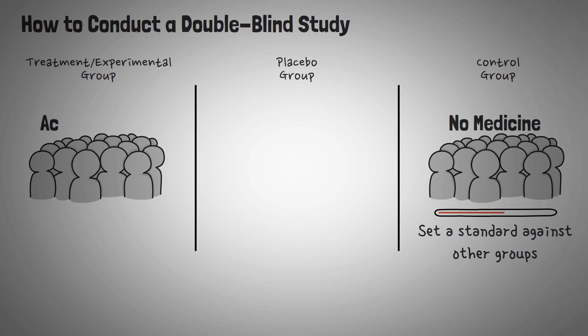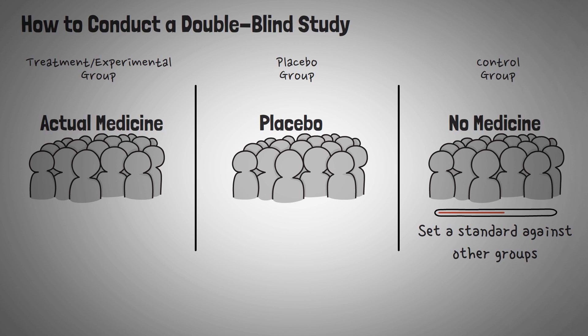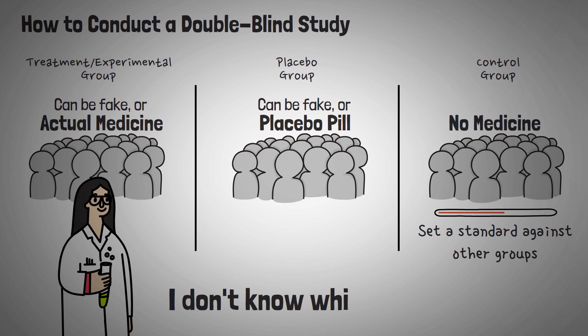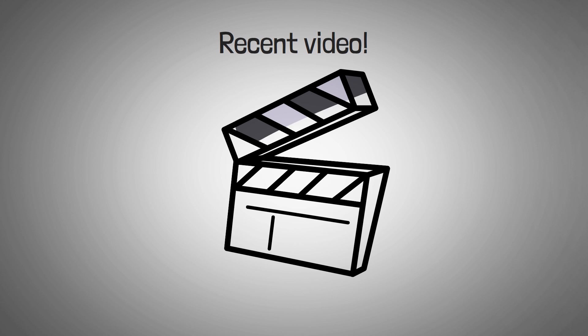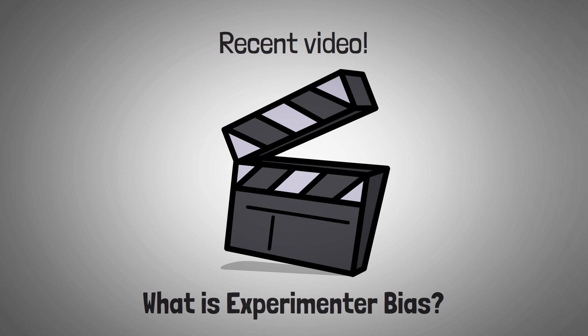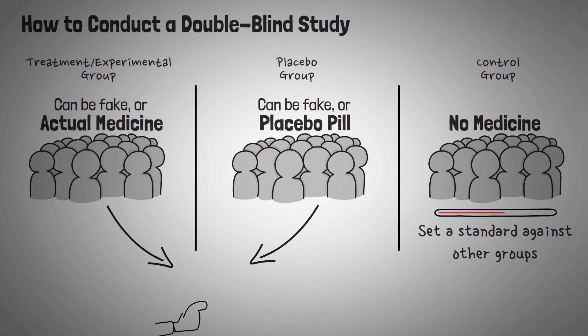People placed in the treatment group are given the actual medication, while subjects placed in the placebo group are offered a placebo pill. The participants in the treatment and placebo groups, nor the experimenters, have the information on who is actually receiving the real drug. If the experimenters knew, it is likely the results could change due to experimenter bias, of which we recently posted a video about. Anyways, at the end of the trial, data is collected from all three groups and compared to determine if the treatment had the expected outcome.